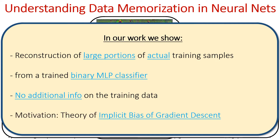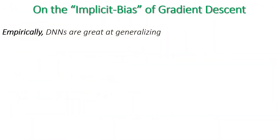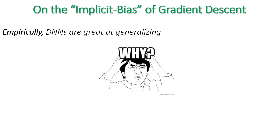Our method is motivated from the theory of implicit bias of gradient descent. Empirically, DNNs generalize very well to unseen data, which has puzzled theoreticians. Why, from the many solutions that can fit a given dataset, do DNNs converge to solutions that generalize so well?